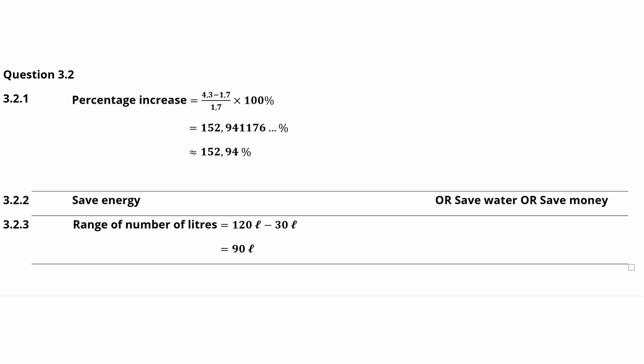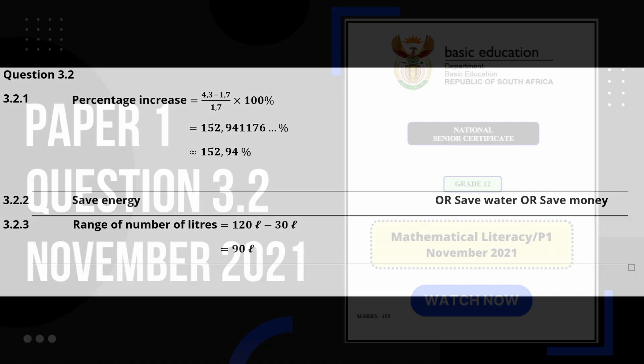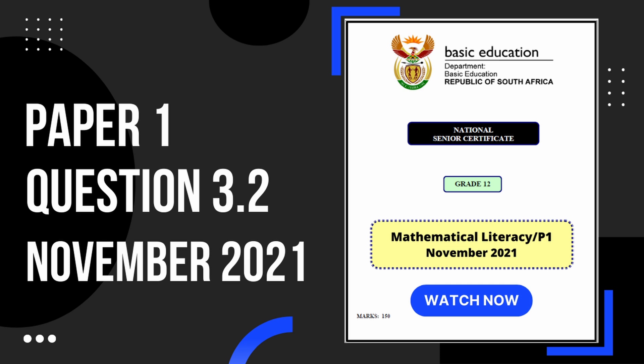This gives us a quantity of 90 litres. And that's going to be it for question 3.2 — if you found this video helpful, you can check out this video next.